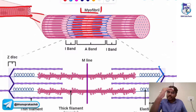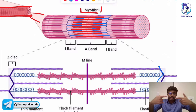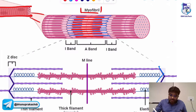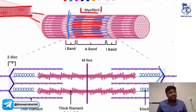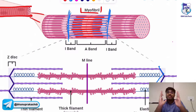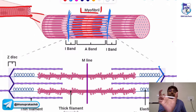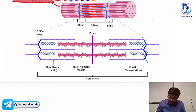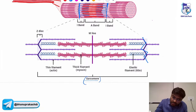In the center there are myosins and actins alternating. There is a Z line on one side and another Z line on the other side — these are two Z lines. In between the two Z lines, this unit is called a sarcomere. This is one sarcomere.